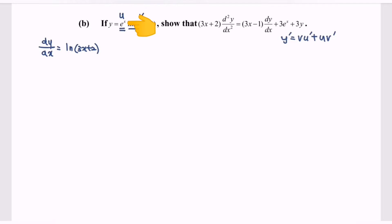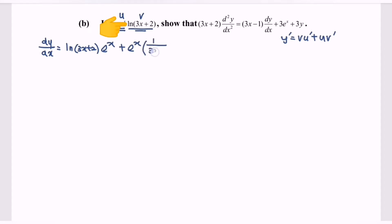This gives us eˣ, plus u which is eˣ, multiplied by v prime. Differentiating ln(3x plus 2) gives 1 over (3x plus 2). Remember to differentiate the internal function, so we multiply by 3.